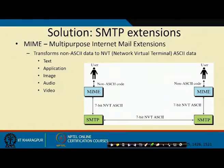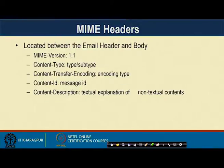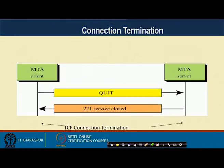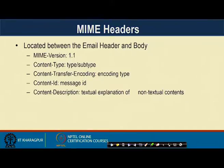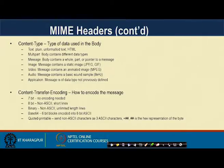MIME headers are located between the email header and body, containing: MIME version, content type, content transfer encoding type, content ID, and content description. Content types include text, plain, multipart, message, image, video, audio, and application. Content transfer encoding options include 7-bit, 8-bit, binary, base64, and quoted-printable. MIME has a rich set of headers to handle different kinds of data.